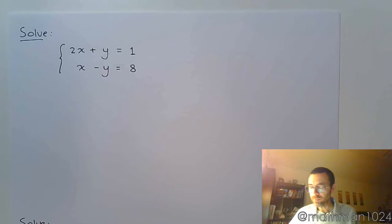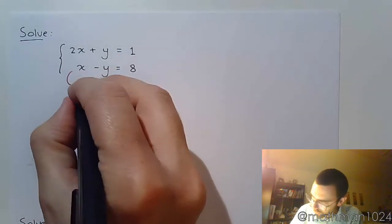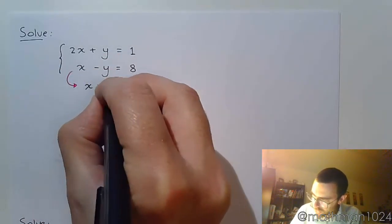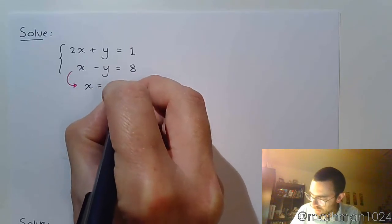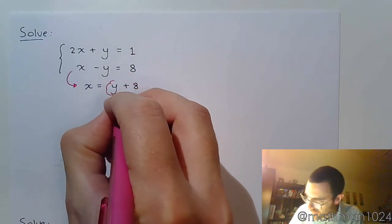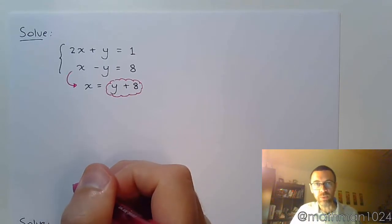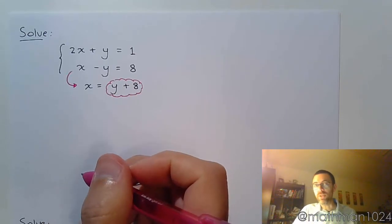If I solve this for X, we solve it by moving the Y to the other side, so it's positive Y with that positive 8 that was over there. So now X is equal to Y plus 8. Any other place in the problem where I see X, I can replace it with Y plus 8.